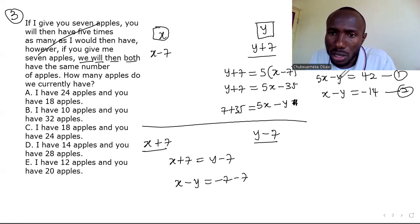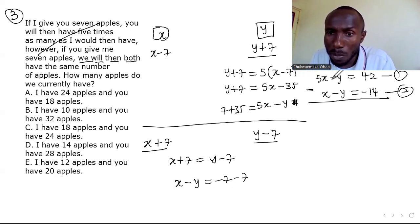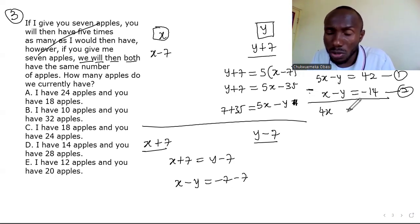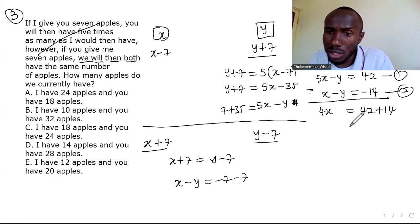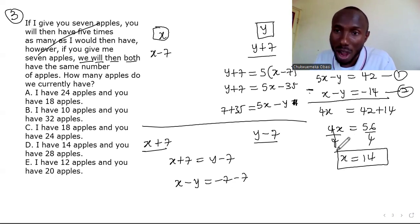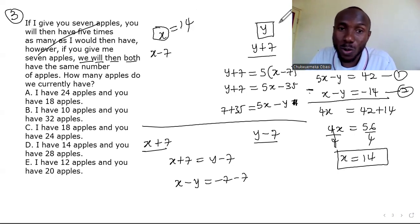Now solving simultaneously: subtracting equation two from equation one. 5x − x = 4x; −y − (−y) = 0; 42 − (−14) = 56. So 4x = 56, divide by 4, and x = 14. Since x is the number of apples I have, I have 14 apples.